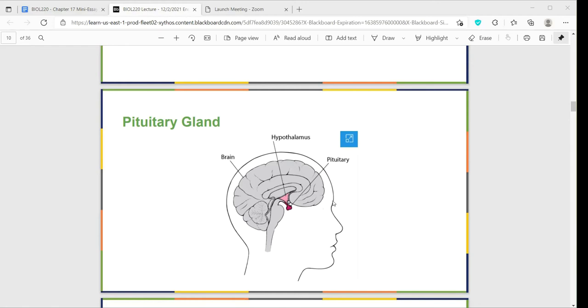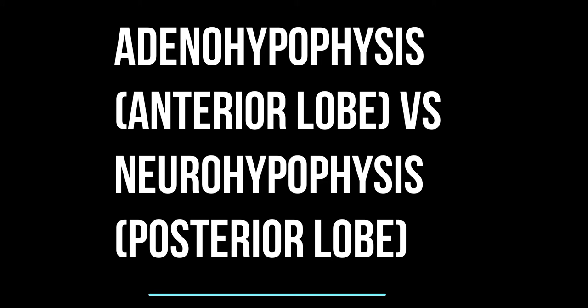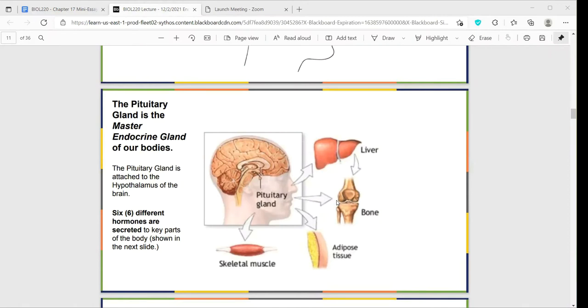Why exactly is the pituitary gland important? There are two halves of the pituitary gland: the neurohypophysis and the adenohypophysis. The 'neuro' aspect deals with the nervous system and neurons. 'Adeno' is a root for gland, so the adenohypophysis deals with the endocrine glands and endocrine cells.